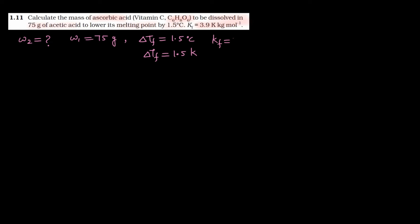यहाँ पे Kf की value भी दी है — Kf is 3.9 Kelvin kg per mole। अब calculate क्या करना है W2? यहाँ पर हमें जरूरत पड़ने वाली है molar mass of ascorbic acid की। तो ascorbic acid का molar mass हम यहाँ पर calculate करेंगे: C6H8O6 equals to 12 into 6 plus 8 plus 6 into 16, जो आएगा 176 grams per mole।